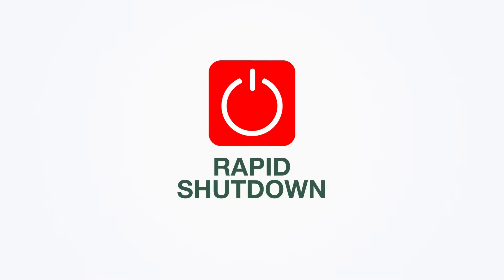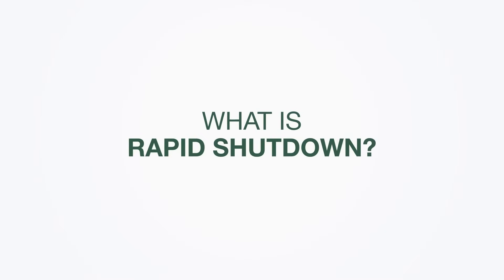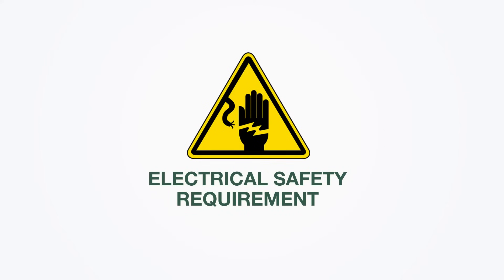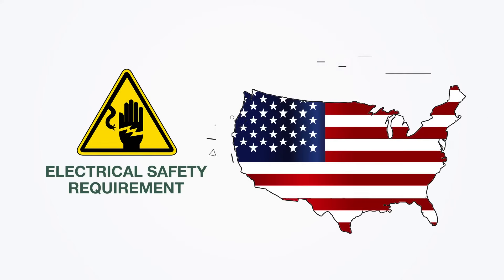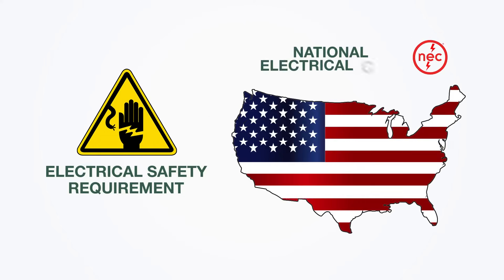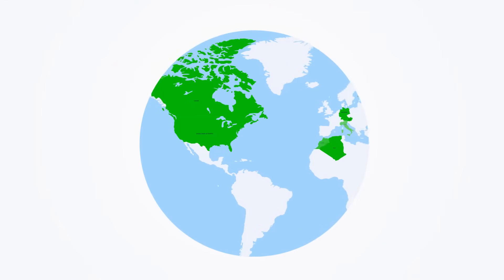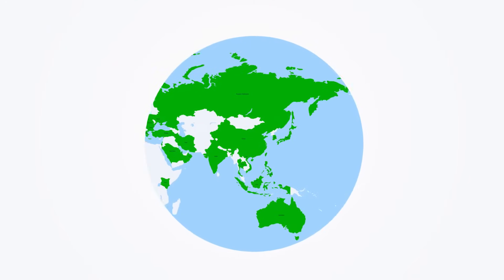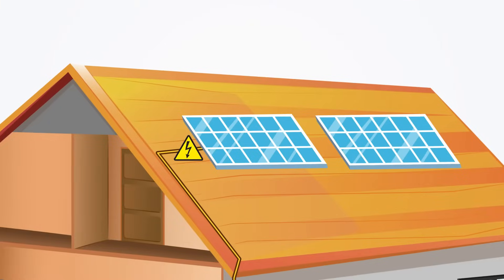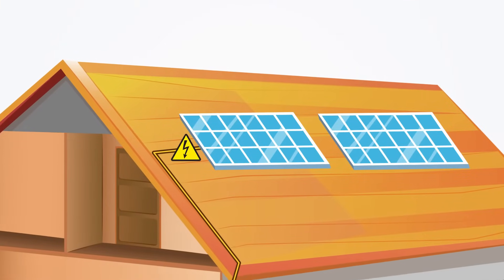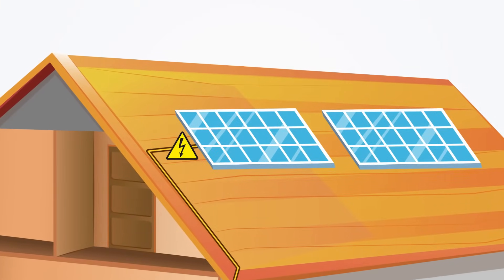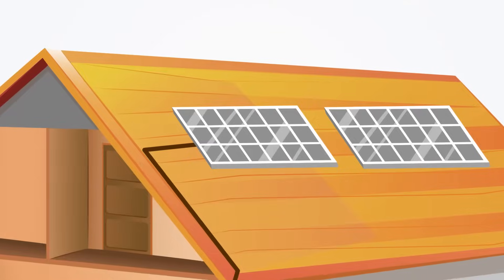That's where rapid shutdown comes into play. So, what is rapid shutdown? Rapid shutdown is an electrical safety requirement that was originally introduced in the United States as part of the National Electrical Code. And now, similar requirements are being implemented all around the world. This requirement applies to new solar installations and requires a way to de-energize rooftop solar arrays by adding an on or off switch.